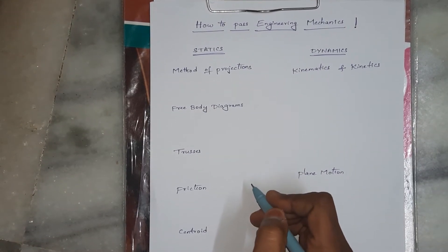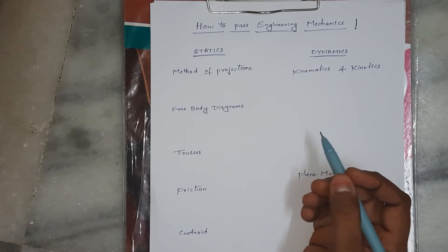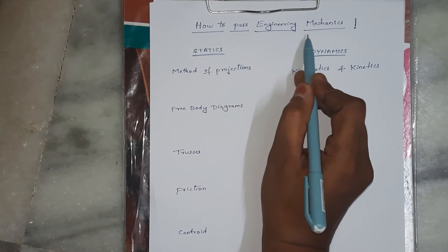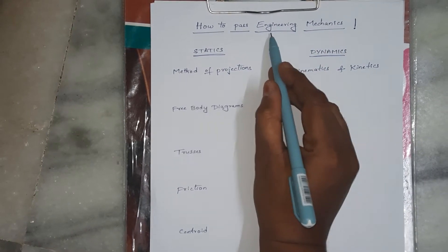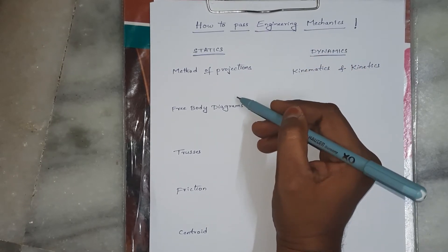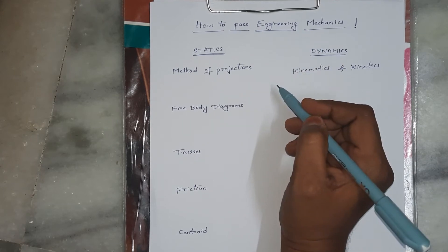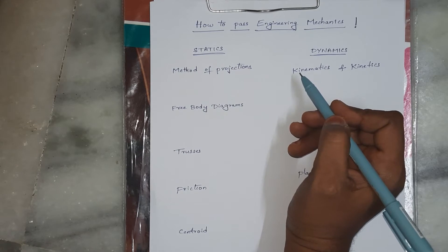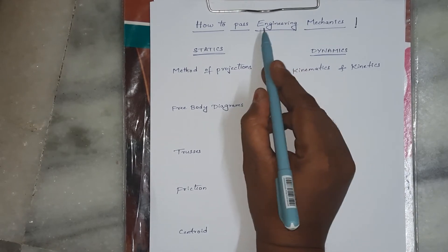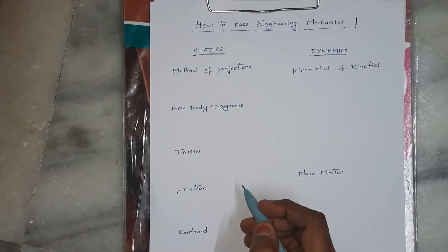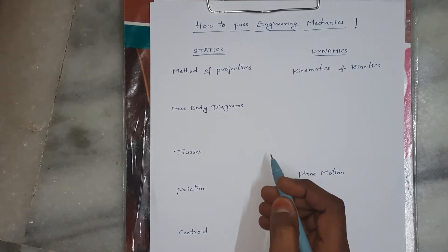How to pass Engineering Mechanics. This is a first-year general engineering mechanics subject. Topics from this subject also appear in second and third year subjects like Strength of Materials and Kinematics of Machines. Many students find Engineering Mechanics difficult. This video will help both those who want to just pass and those who want full scores.